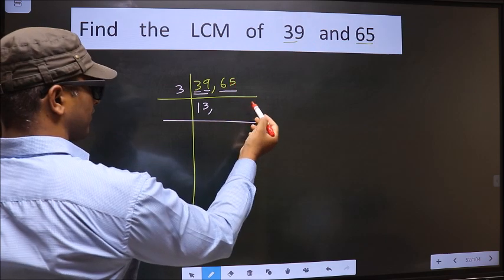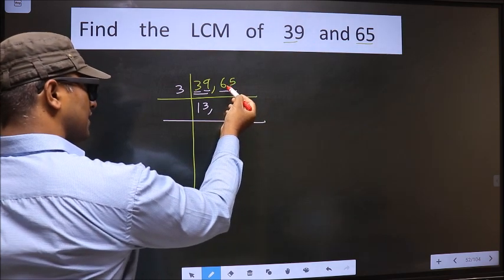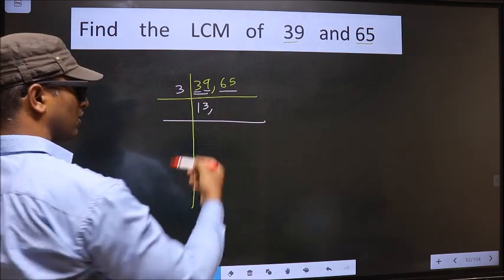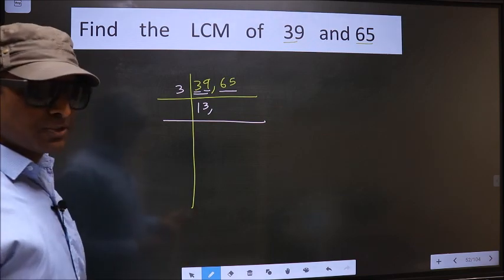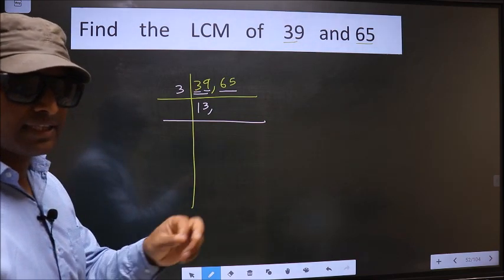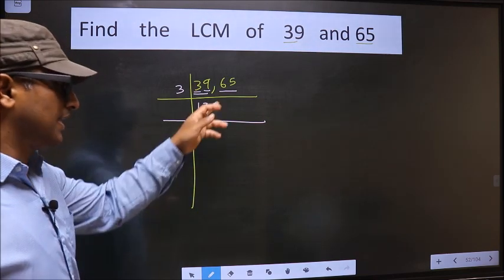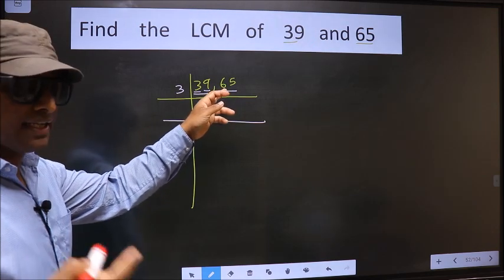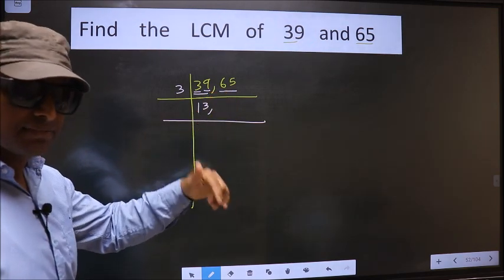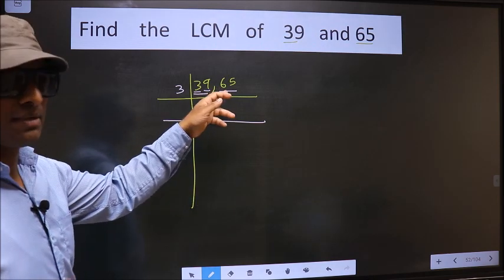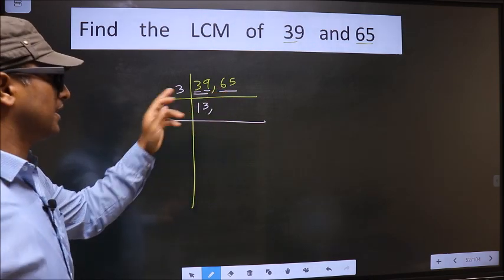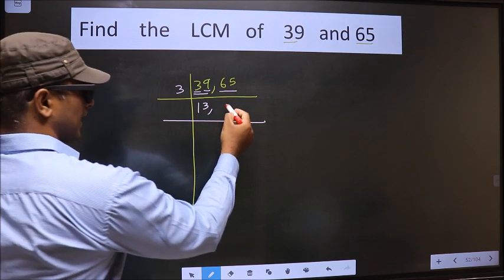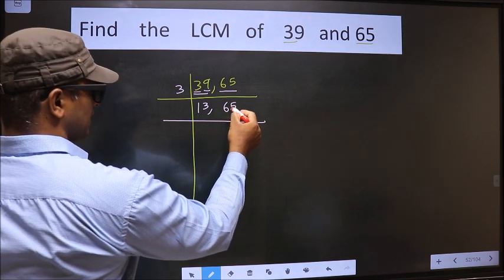Now the other number 65. To check whether this number is divisible by 3 or not, we should add the digits. That is 6 plus 5, 11. Is 11 divisible by 3? No. So this number is also not divisible by 3. So we write down 65 as it is.